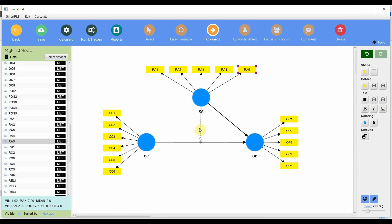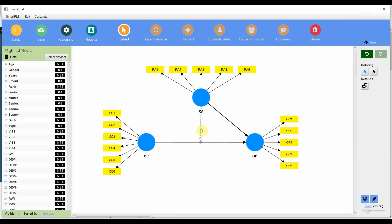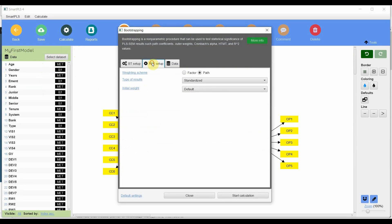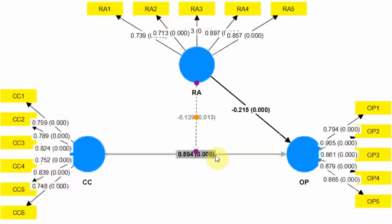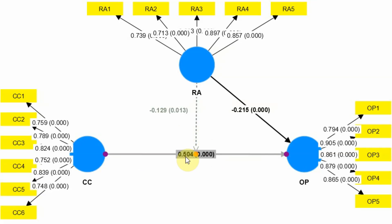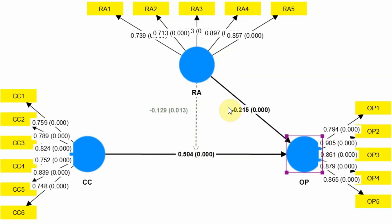Once you have added the moderating effect, this line represents RA moderating the relationship between CC and OP, because the line from the moderating variable points at that particular relationship. You do not need to do anything else — just go to Calculate > Bootstrapping, keep it to default, and start the calculation. Here are our results. RA is negatively moderating — that is, weakening or dampening — the relationship between CC and OP. RA has a significant impact on OP, but the main concern is the moderating role of RA.